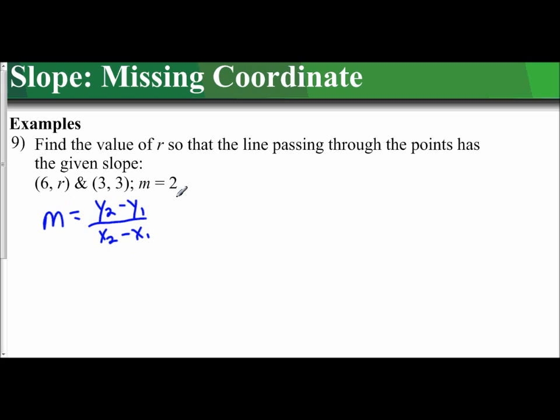If I look, I know my slope is 2, so I'm going to plug in 2 for my slope. So I know my y2 is 3, my y1 is r, and I know my x2 is 3 and my x1 is 6.